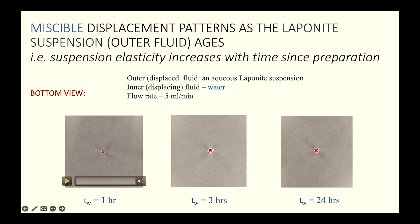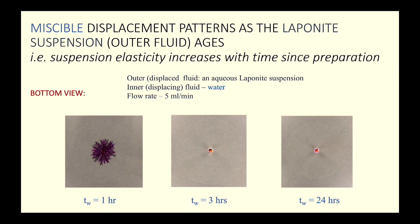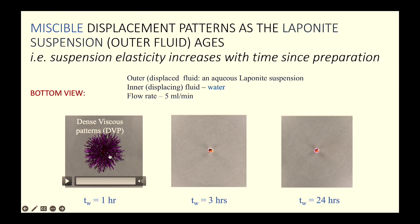At one hour, the laponite clay is quite viscous. The clay viscosity exceeds that of the injected water, producing a viscous instability. The pattern shows propagation mainly by tip splitting with few side branches and no clearly defined boundaries; fingers even start merging into each other. This is called a dense viscous pattern.